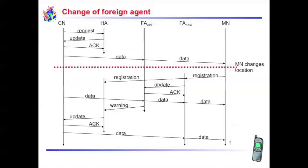Let me explain this process through a figure. In this figure, first the ideal situation is discussed where both the correspondent node and mobile node are in the same home area. The correspondent node sends a binding request to the home agent. The home agent then sends a binding update to the correspondent node. The correspondent node sends an acknowledgement to the home agent, and then the data is sent to the mobile node.